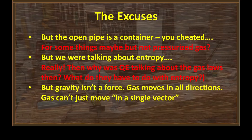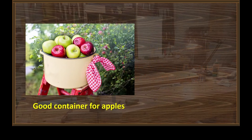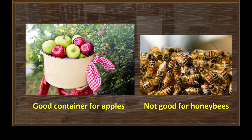Here are a few of the excuses they came up with: 'But the open pipe is a container — you cheated, Blue Marble.' Well, that open pipe might be a container for some things, but it's certainly not a container for pressurized gas. Let me give you a simple example of how some things can be good containers for one item and not a container at all for another. That open pot is a perfectly good container for apples. Try putting a couple hundred honeybees in there and see how that works. Good container for apples — not good for honeybees.